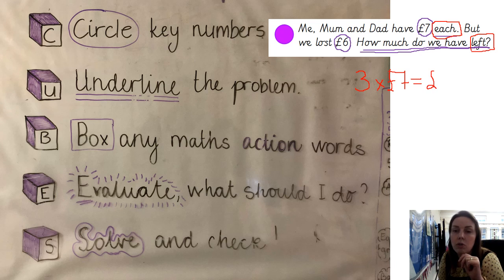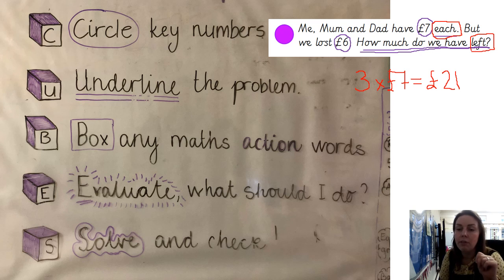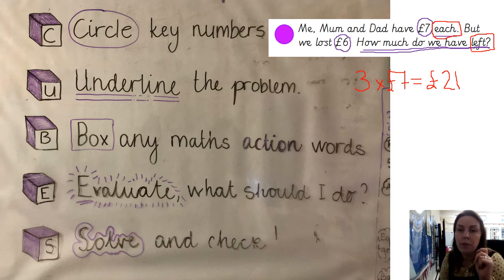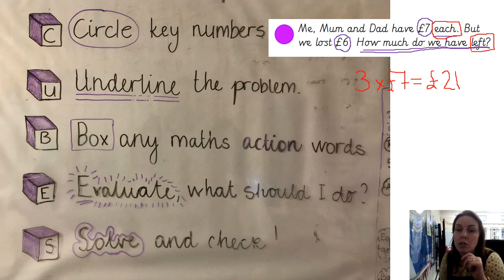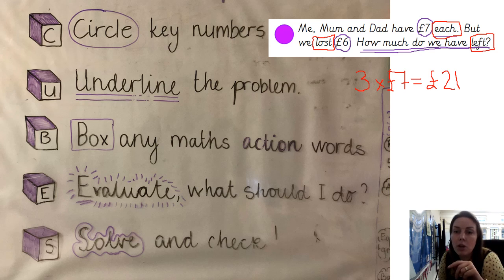So 3 lots of 7 is 21 — altogether we have 21 pounds. How I worked that out: 7 add 7 is 14, add another 7 is 21. That is my first working out. Now, all together we had 21 pounds but we have lost 6 pounds, so this second step is also a subtraction problem: 21 pounds take away the 6 pounds that we lost.